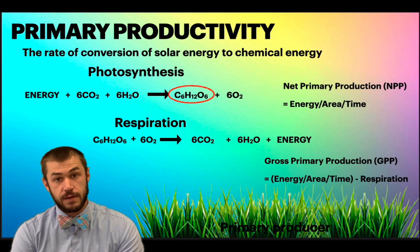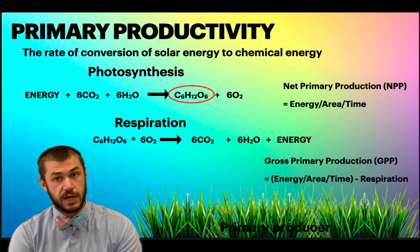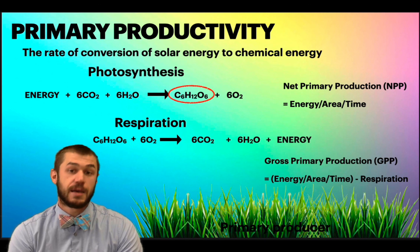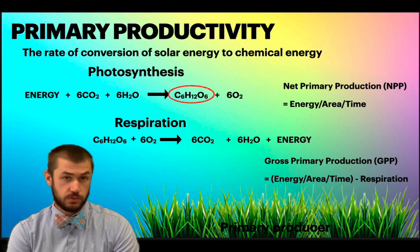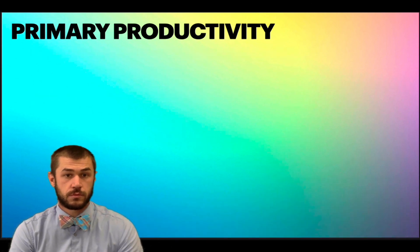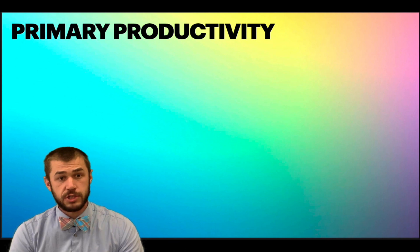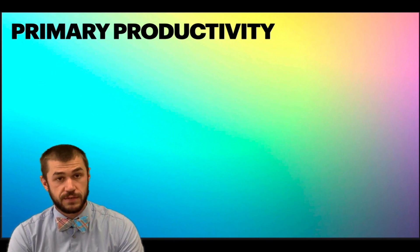So when we subtract the respiration that a plant does from the photosynthesis, we get gross primary productivity. The units are the same, the amount of energy per area per unit time. And it's net primary productivity minus respiration.